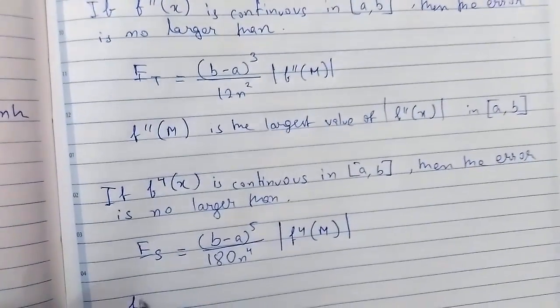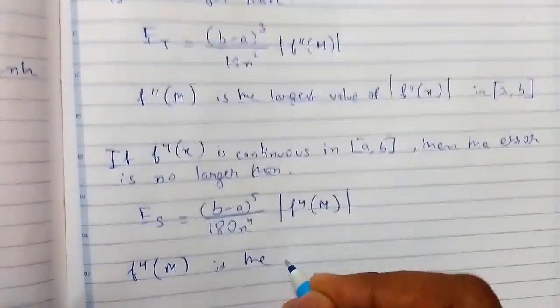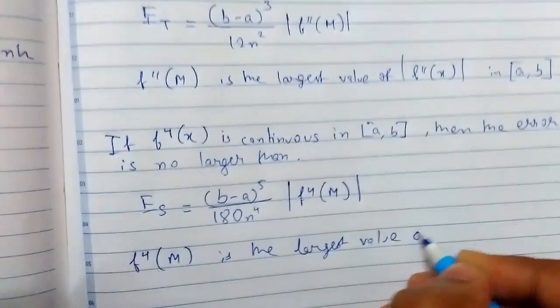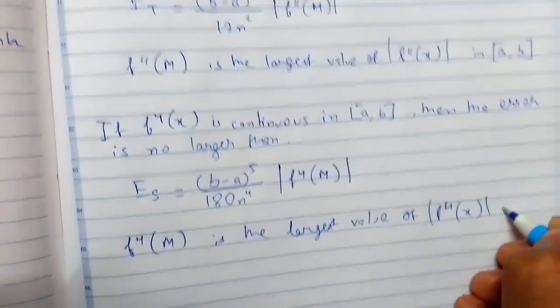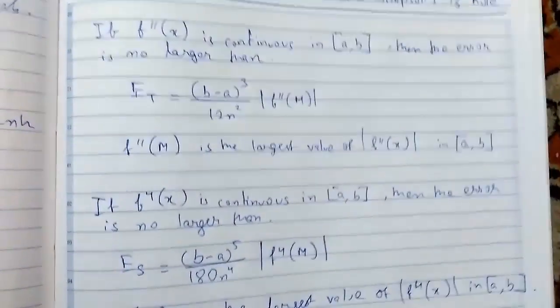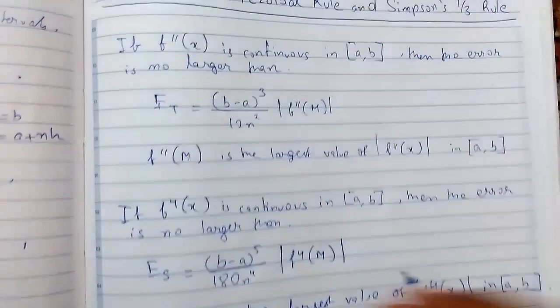where f⁽⁴⁾(m) is the largest value of |f⁽⁴⁾(x)| in interval [a,b]. This is how you find the error values for both trapezoidal and Simpson's rule.